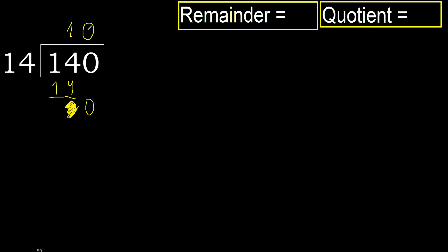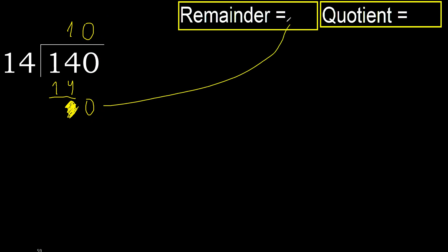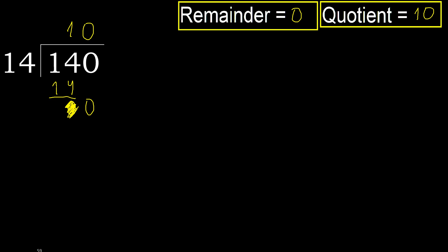Always complete with 0 — complete because here it is finished. 140 divided by 14 is 10.